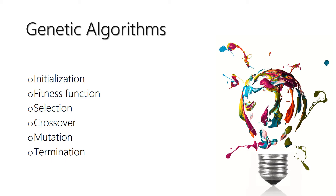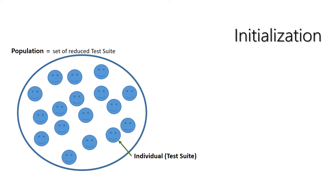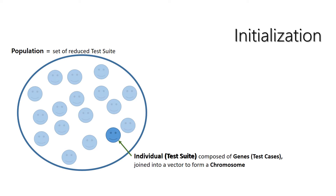Genetic algorithms start with initial solutions and then select the best ones in order to recombine them and obtain better solutions with an iterative process. During the first step, an initial population is randomly created. Each individual is a solution of the problem and is characterized by a set of parameters called genes, which compose each chromosome.